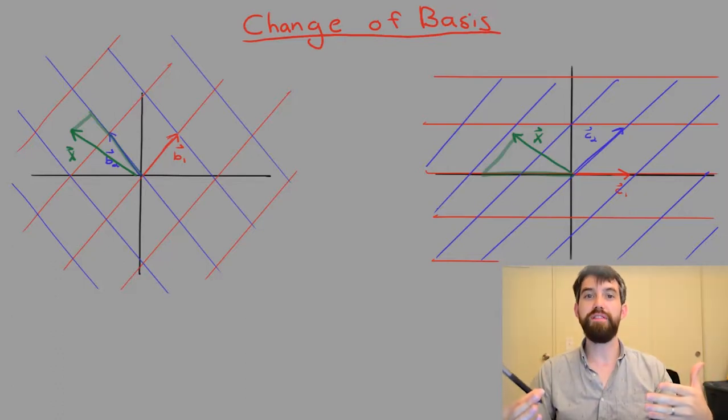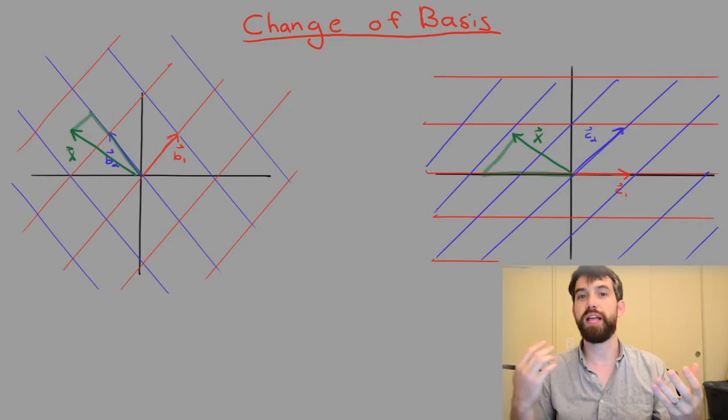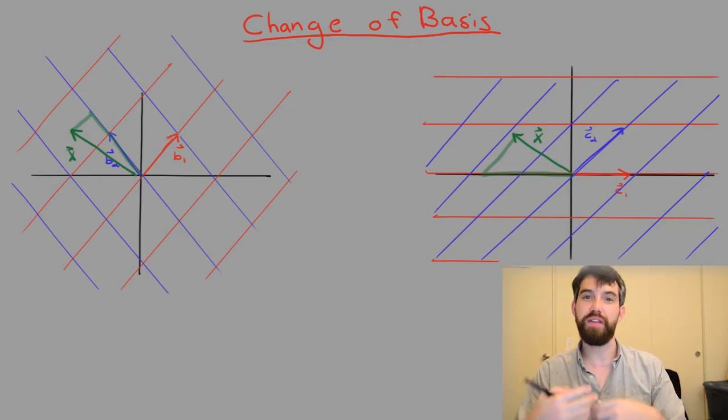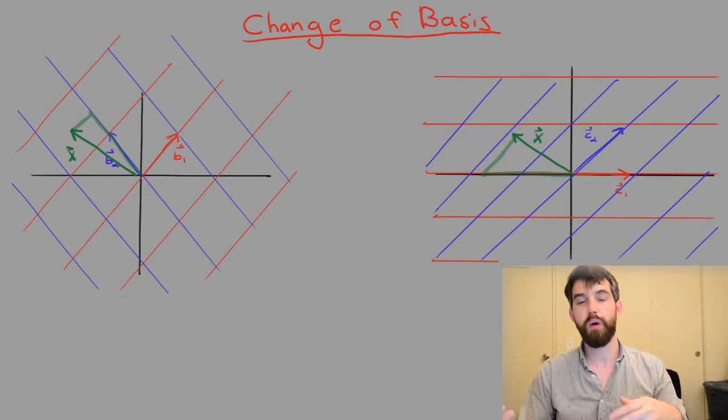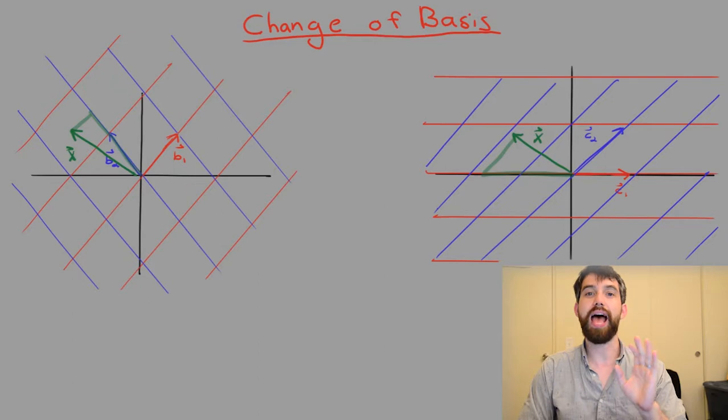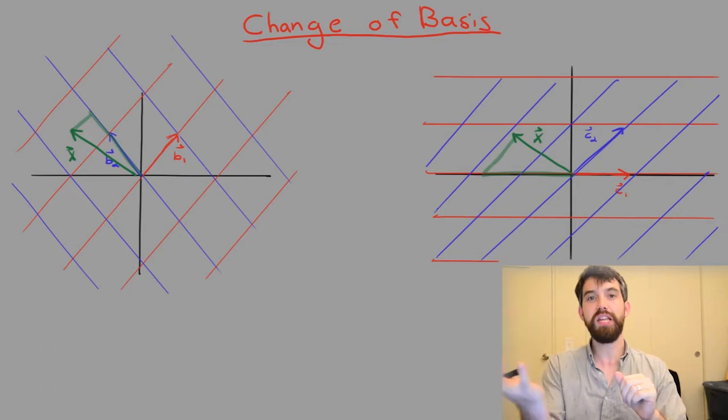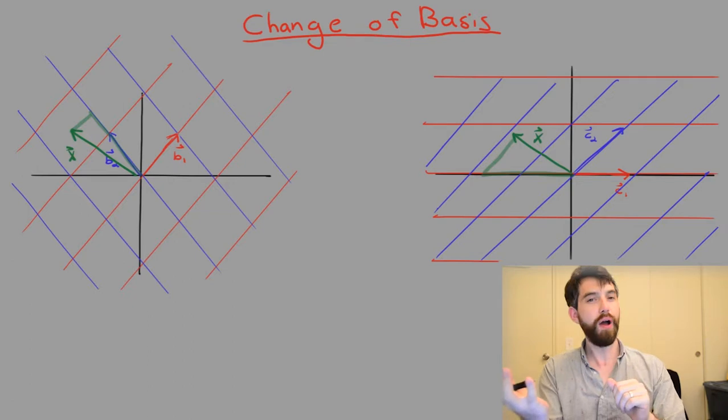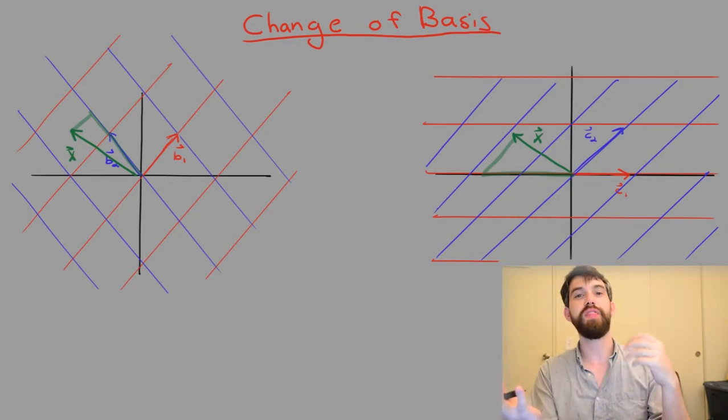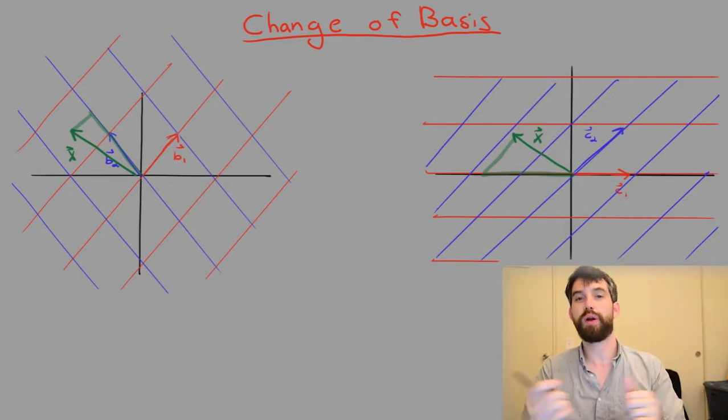In the previous video, we had investigated the coordinate system for a B basis and for a C basis, and we'd seen how a vector X can be written in terms of both of these two different bases. What we want to do now in this video is answer this question algebraically as opposed to geometrically. That is what we're going to answer in this video.